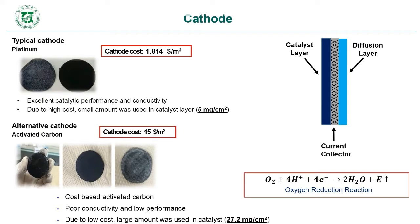Generally, platinum cathode is considered a good cathode because of its high performance, but it has one major problem: it costs about $1,814 per meter squared. This means it is a costly material. The best alternative reported in the literature is the activated carbon cathode, which is a low-cost material but has low performance and low conductivity.